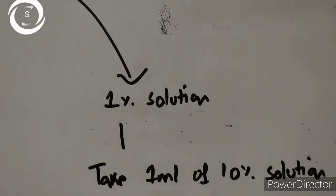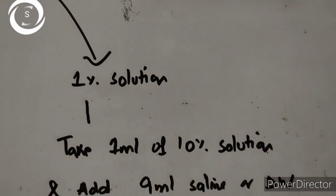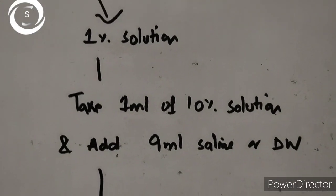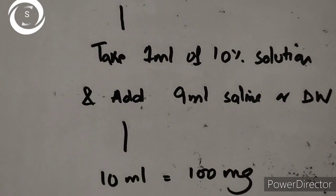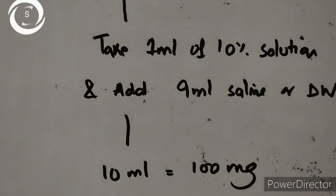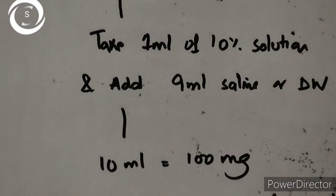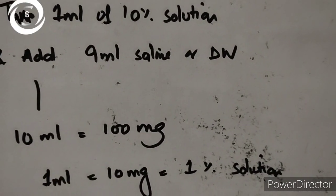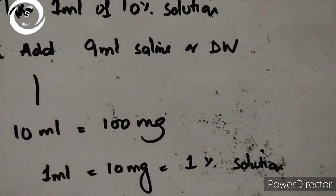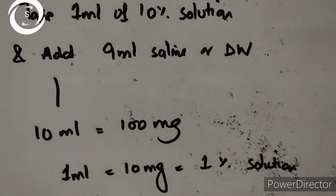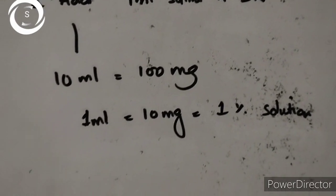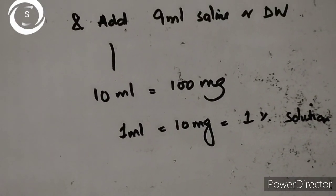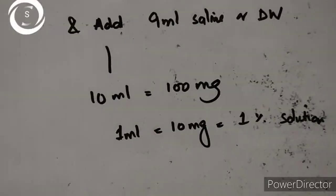To make a 1% solution, take 1 ml of the 10% solution containing 100 mg, and add 9 ml of saline or distilled water. This gives 10 ml containing 100 mg, so each 1 ml contains 10 mg, which equals a 1% solution. The 1% solution is used four times a day in all types of keratitis.